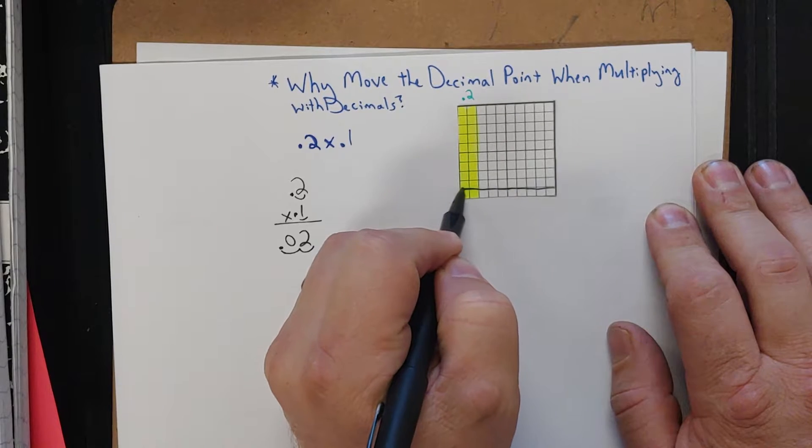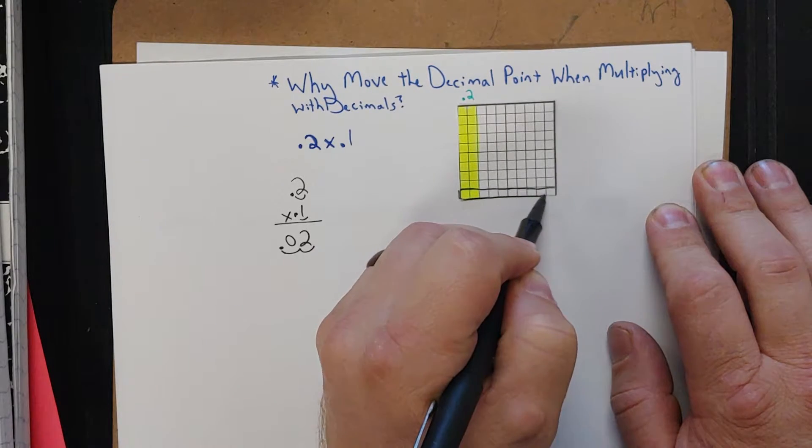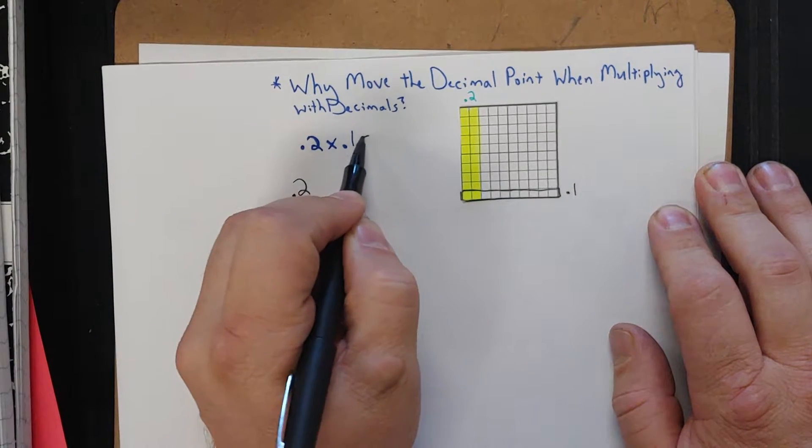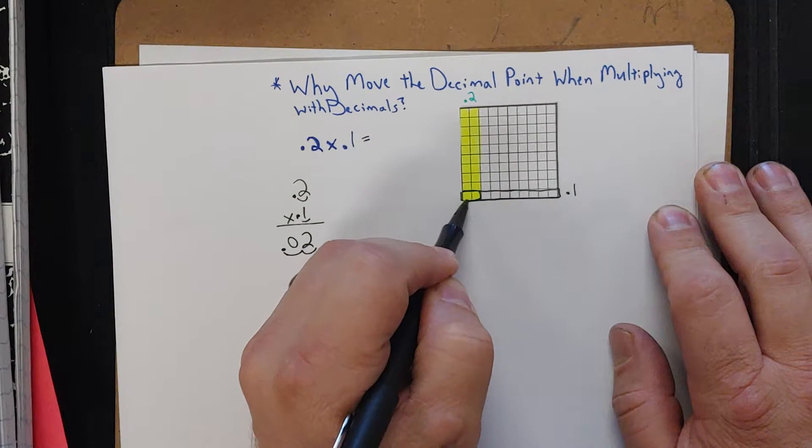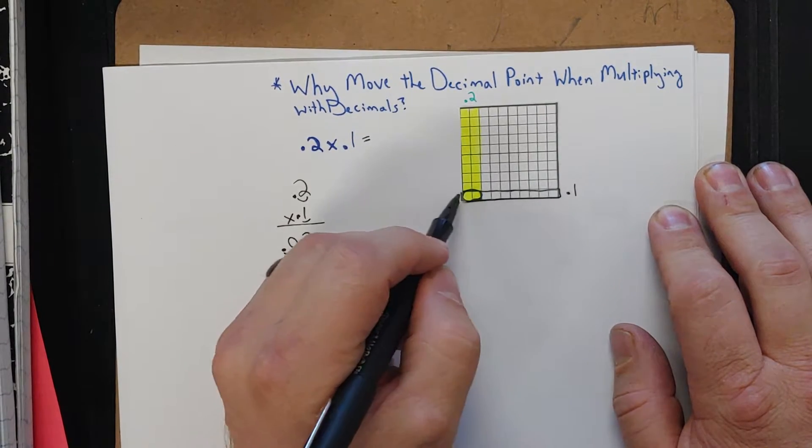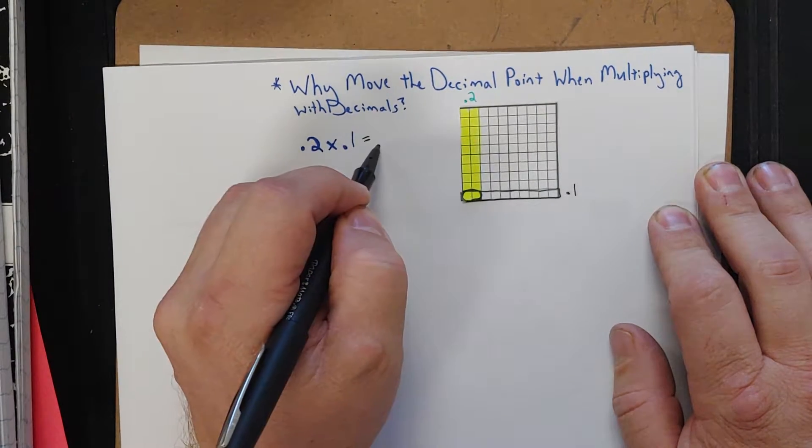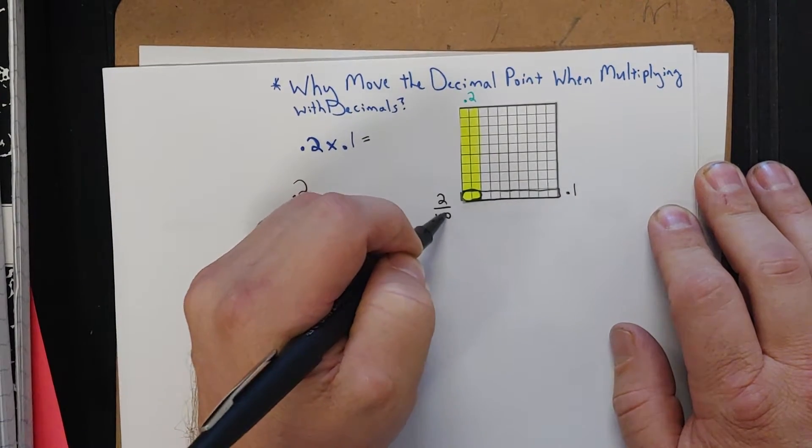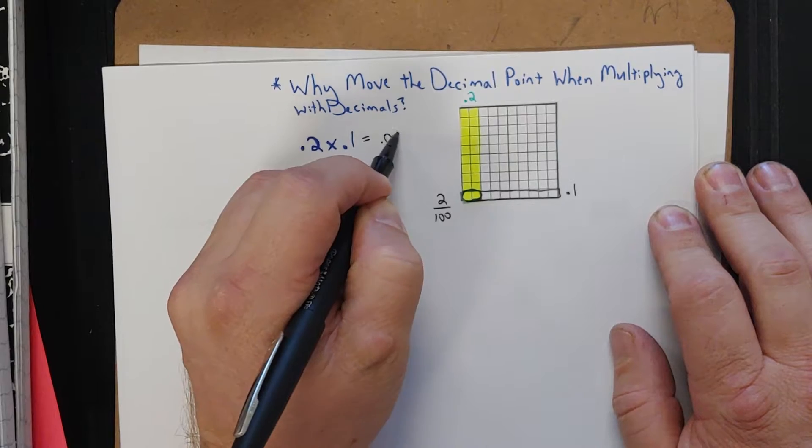Now again, I would show 1 tenth group of 2 tenths. And what is that going to be? Well, there's my 1 tenth of the group of 2 tenths. One group, sorry, 1 tenth group of 2 tenths, which is what? Is that 2 out of a hundred, which is 2 hundredths.